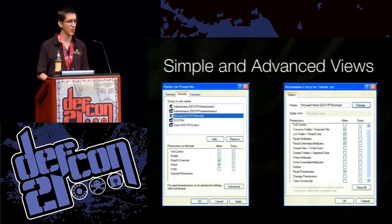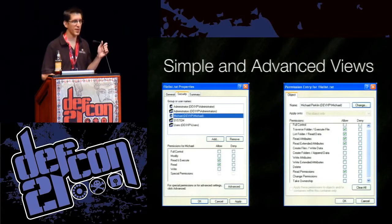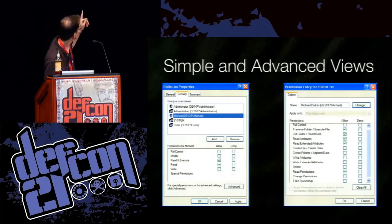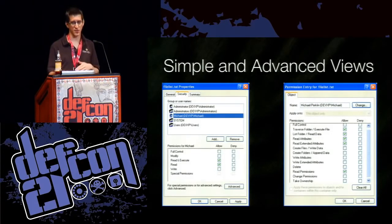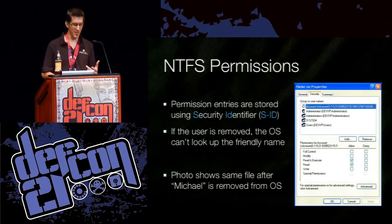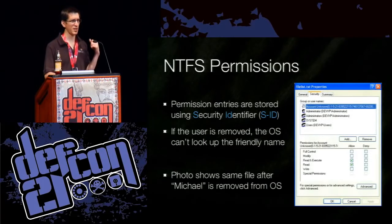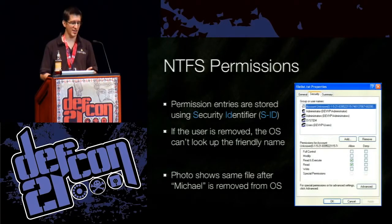This slide shows the difference between the simple and advanced views of permissions. On the right you see many more granular permissions. If a user is removed, the operating system can't look up the friendly name to display in the dialogue. If you delete the Michael user, the top entry in the security list will show the raw SID — something like S-1-5-... — because Windows can't look it up. This confirms that NTFS stores all permissions by identifier and not by username.